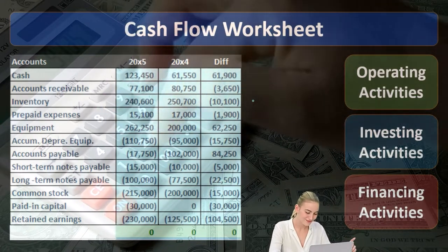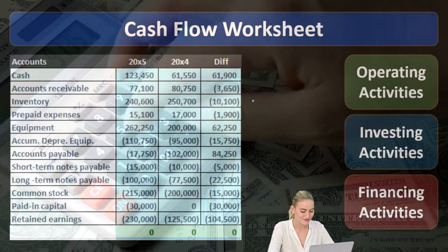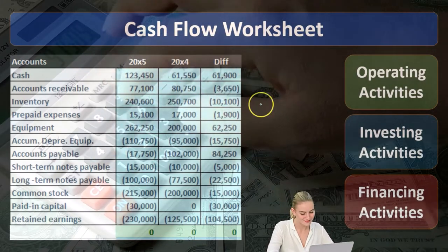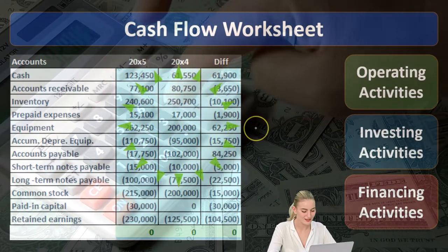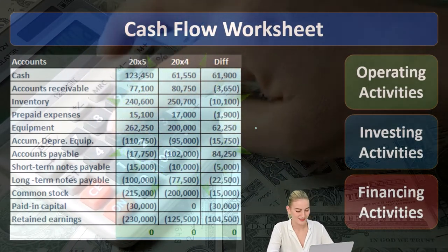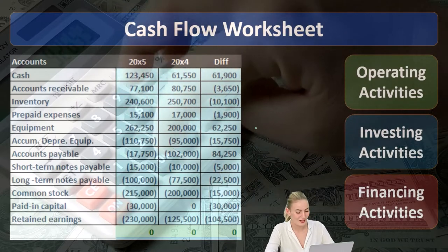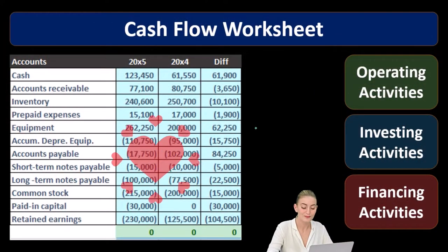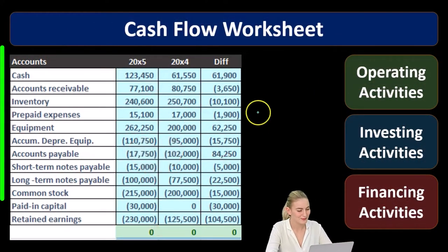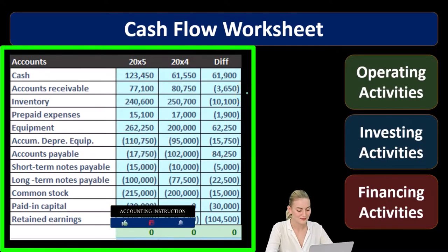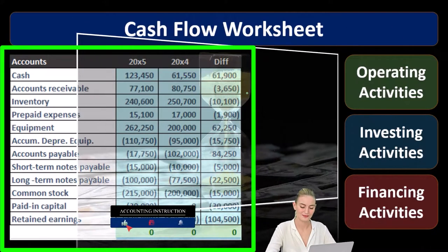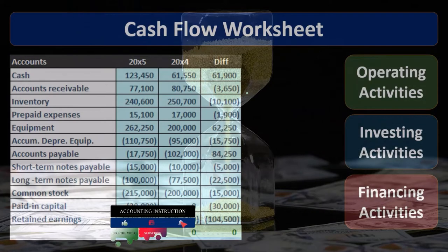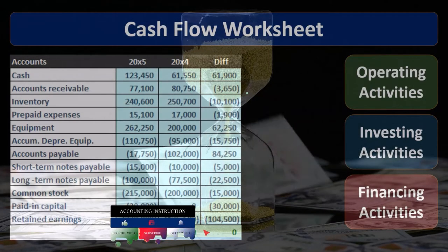If we take the difference between the two periods, the change will also equal zero. So this is the type of worksheet we'll put together from the balance sheet in order to move forward. This will give us a lot of the information we're going to use — this is the primary worksheet. These differences don't represent balance sheet accounts as of a point in time; what they really represent is the change, what happened over time. Therefore, these differences really result in income statement type of activity.